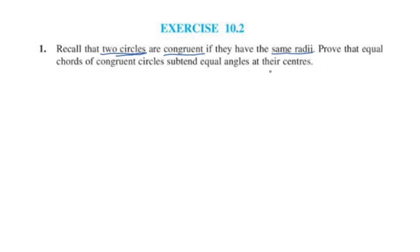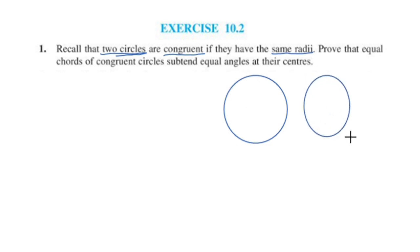We have two congruent circles. These circles are congruent circles. This is the radius of each circle.